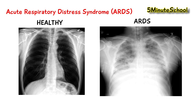Here is an x-ray showing healthy lungs alongside an x-ray showing someone with Acute Respiratory Distress Syndrome. On the ARDS x-ray you can see whiteness on both sides of the lungs — this is known as bilateral opacification. Opacification on an x-ray simply means whiteness as opposed to shading, and we see this bilaterally on both sides of the lungs.